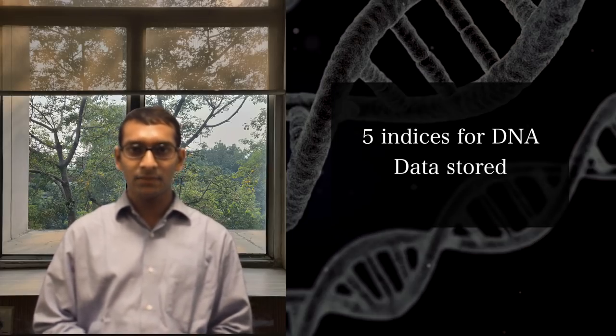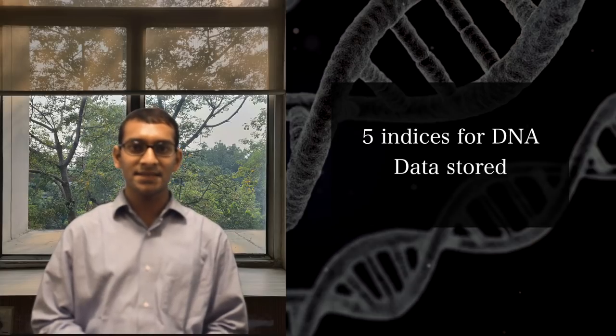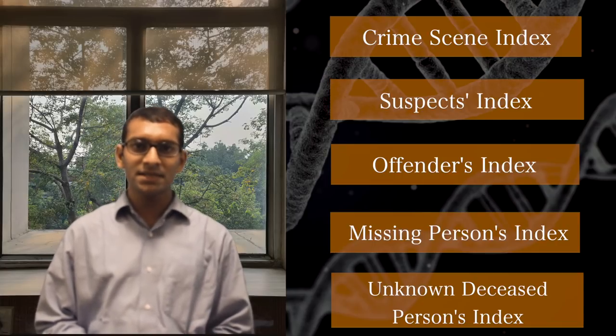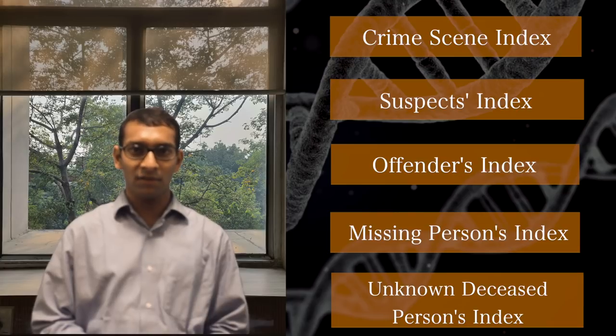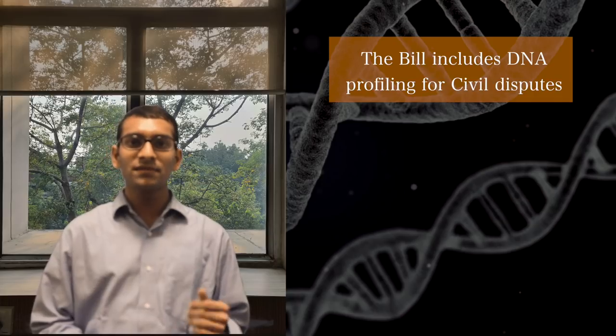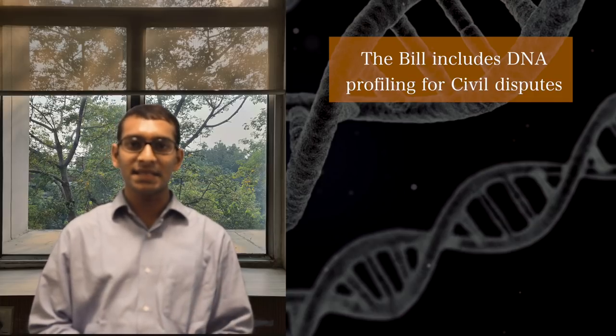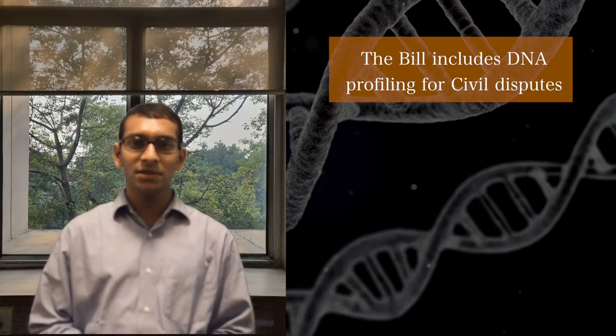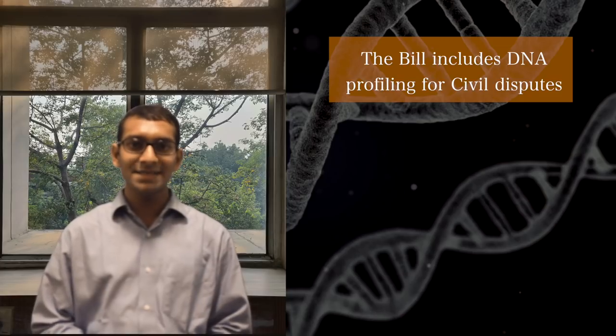The data inside these data banks will be organized into various indices. This may include indices for crimes, victims, offenders, or missing and deceased persons. While the bill allows for the use of DNA profiling in criminal investigations, it also allows the use of DNA profiling for certain civil matters.